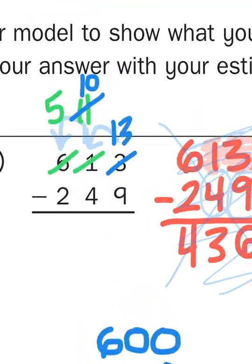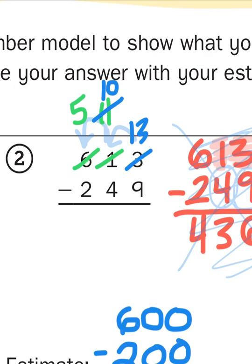Back to the problem at hand. So now I have my 613 broken up into 500s, 10 10s, and 13 1s. So now I subtract. 13 minus 9 is 4. 10 minus 4 is 6. And 5 minus 2 is 3. So my actual answer to this problem is 364.